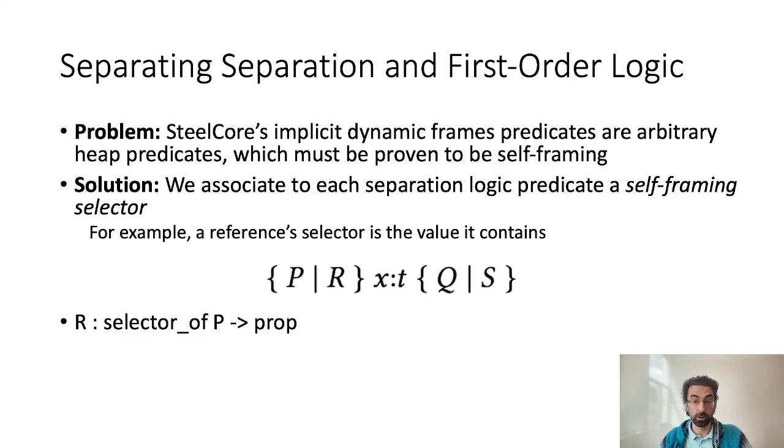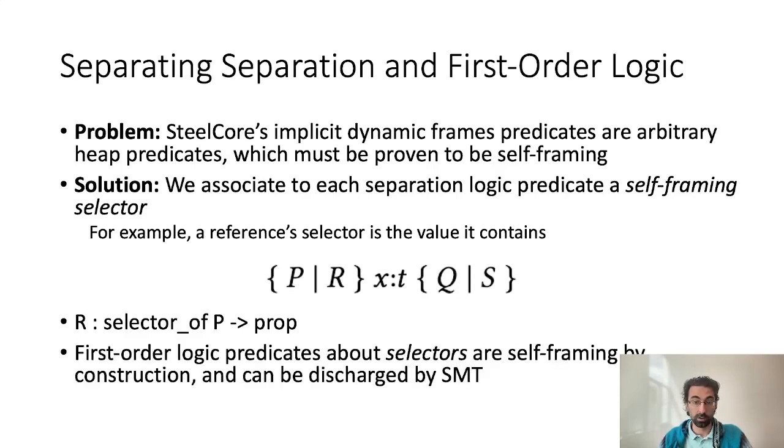Building upon this, we propose a new formalism based on quintuples, where P and Q are separation logic assertions and R and S are selector predicates. For instance, R is a proposition that can only access the selector of P. Selector predicates are therefore self-framing by construction, and we can abstract away the complex self-framing requirement from the user and the solver. First-order logic selector predicates, for instance relating reference values in swap, can then be easily encoded to SMT. In the paper, we provide the full calculus using quintuples and prove it sound with relation to SteelCore.